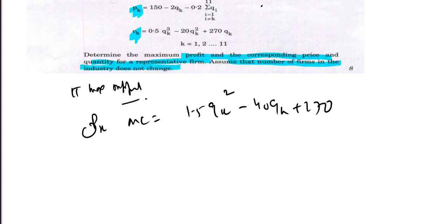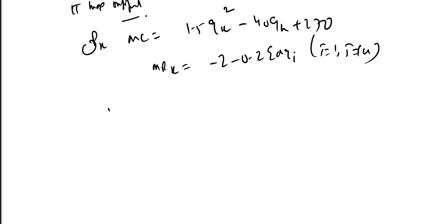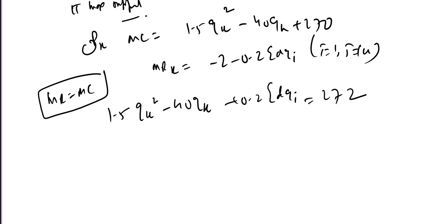To find the marginal revenue, what will we do? First we'll multiply P into Q to get Q_k square. So marginal MR will be, if we take dT/dQ_i, minus 2 dQ_i, i equal to 1 to k.